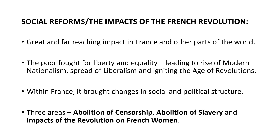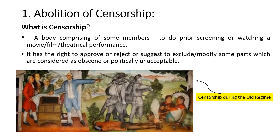Among these impacts, three areas can be discussed broadly: the evolution of censorship, abolition of slavery, and French women. Firstly, what is censorship? You must have heard the term 'censor board' when a movie is released. It is a body comprised of members authorized to do prior screening of a movie, film, or theatrical performance before its public release. This body has the right to approve, reject, or suggest modifications if they find content obscene or politically unacceptable.